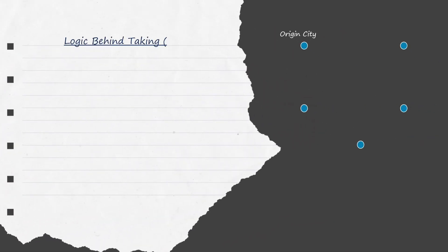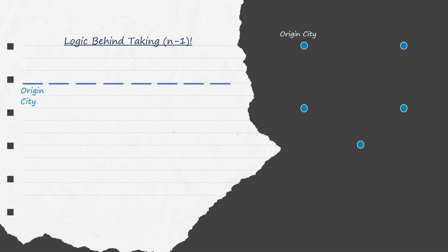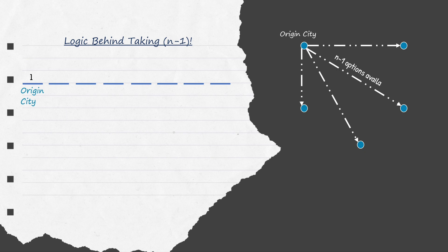Want to know the logic behind taking n-1 factorial? We know that there are n cities in total and the salesman has to start his journey from the origin city and end his journey at the same city itself. That means the origin city is both the initial and the final point of the journey. For starting the trip, the person has only one option, i.e. start from the origin. Since the person is required to visit every city only once and there is a path between every city, so to traverse to the second city, he is left with n-1 options.